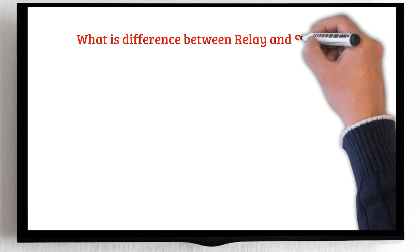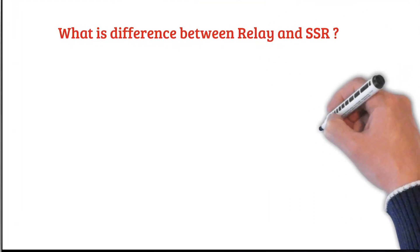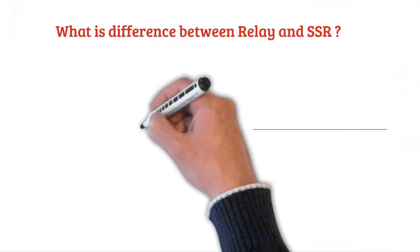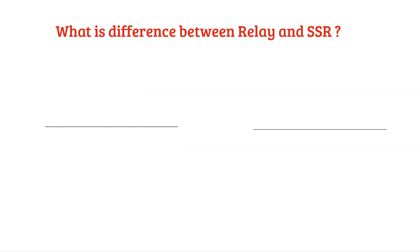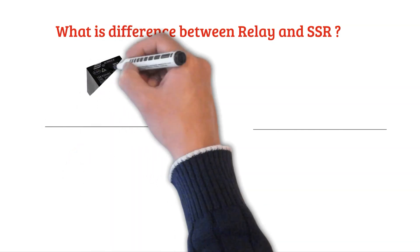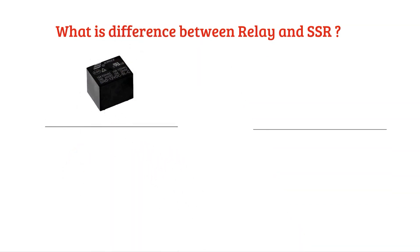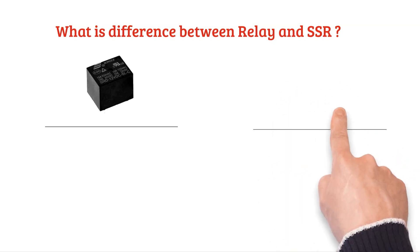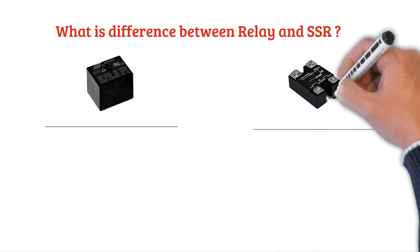What is the difference between a common relay with an electromechanical switch and a solid-state relay or SSR? This is the common relay, and this is one SSR based on the electronic switch.